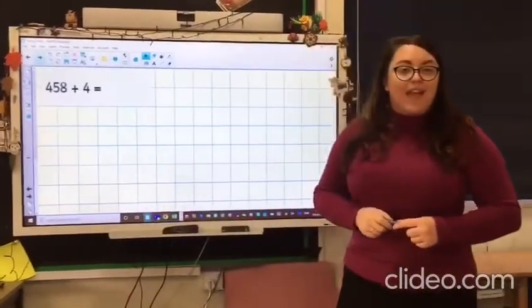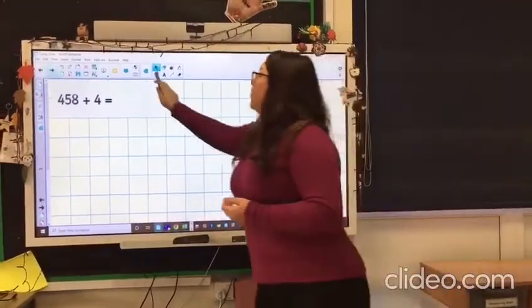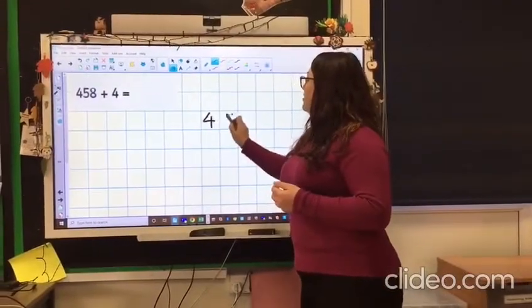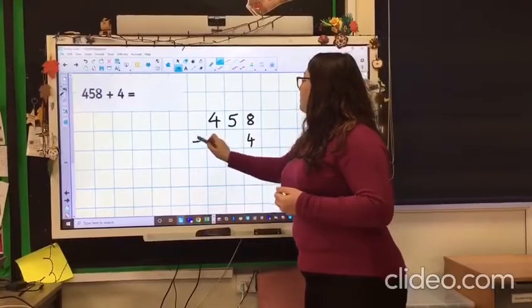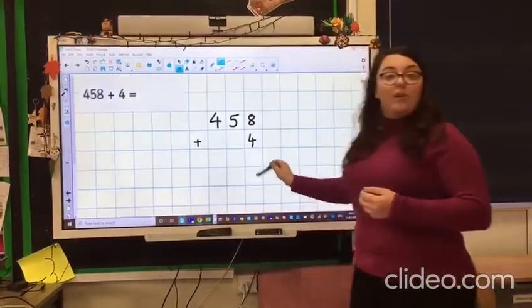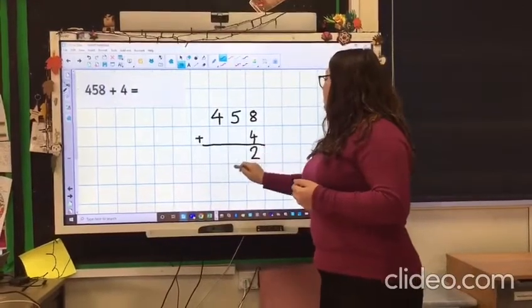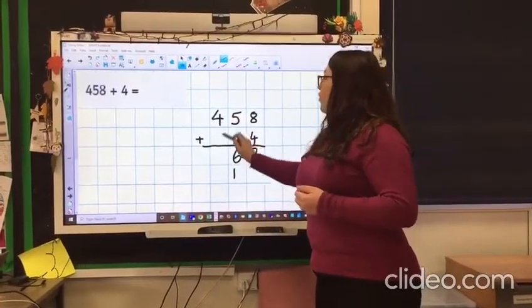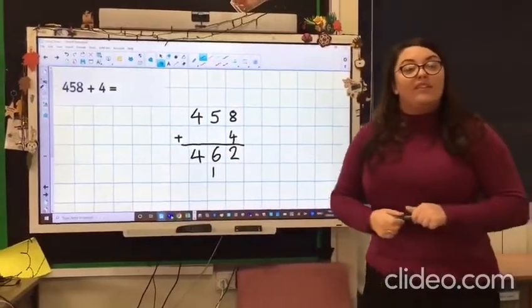458 add 4. Now you probably can do this in your head, but if you wanted to work it out using your column method: 458 add 4. 8 add 4 we know is 12, so 2, carry over your 1. 5 add 1 is 6, 4 add nothing is 4. So your answer for that one should have been 462.